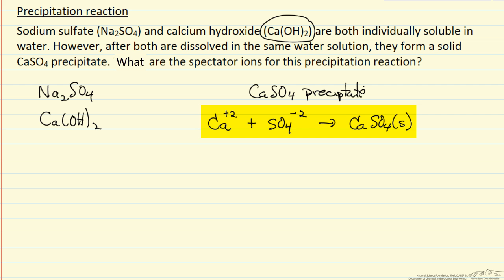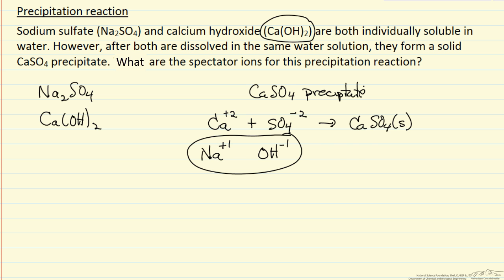So if this is the reaction, I also have sodium ions at plus 1 and hydroxide ions at minus 1. They are not involved in this reaction, so these are the two spectator ions, and that is what the problem is asking for.